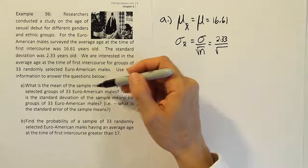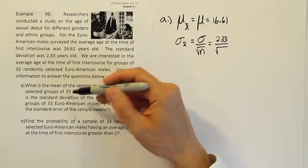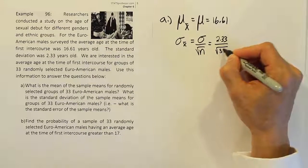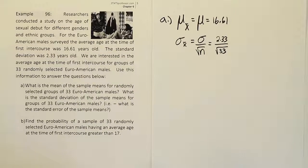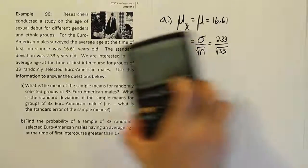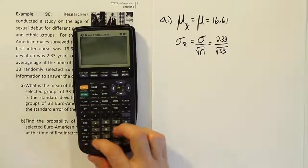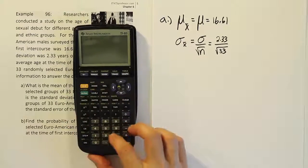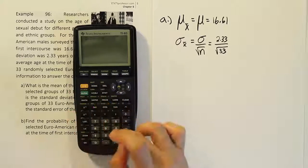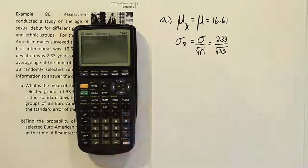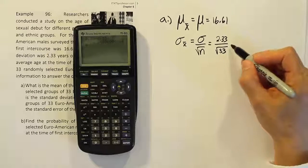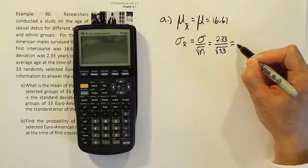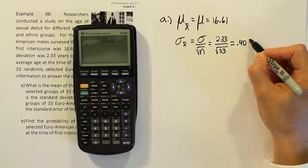is basically based on what we're saying in the problem here. It says, what is the mean of the sample means for randomly selected groups of 33? So the sample size is 33, because we're taking groups of 33 Euro-American males. Then from there, what we want to do is simply work out 2.33 divided by the square root of 33, and this will give us an approximation to our value, and that value is 0.406.